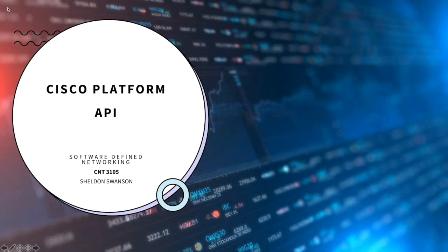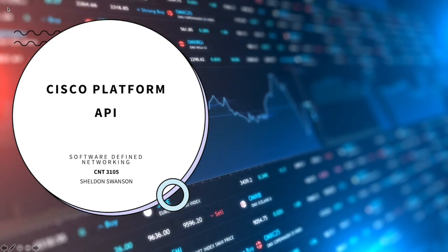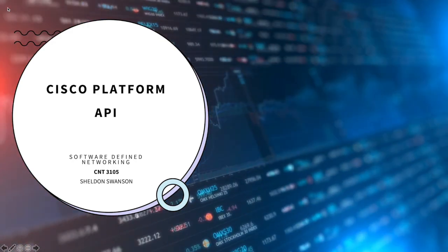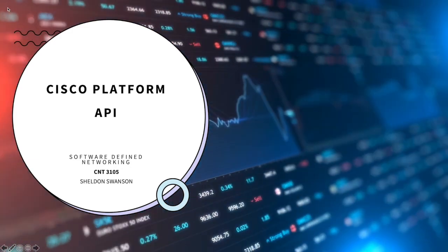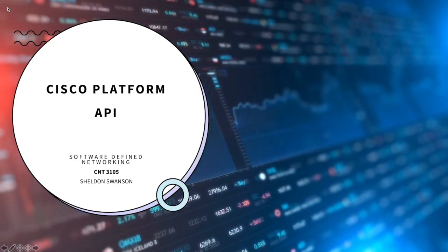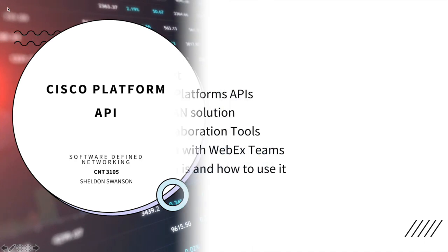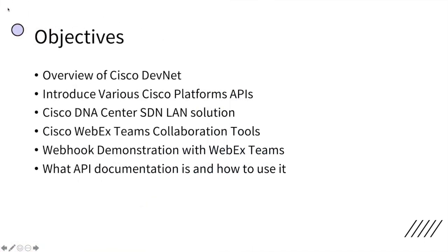We are actually going to start to delve into some of Cisco's products — and they are doing a very good job at leading the way in educating the industry on APIs, software defined networking, and automation. So we're also going to look into some resources that you can use to further your education. This is going to be Cisco Platform API. Our objectives for this module include an overview of Cisco DevNet, which is their open free tool at developer.cisco.com, and we'll learn all the things that Cisco DevNet has to offer. We're going to introduce the various Cisco platforms and their APIs.